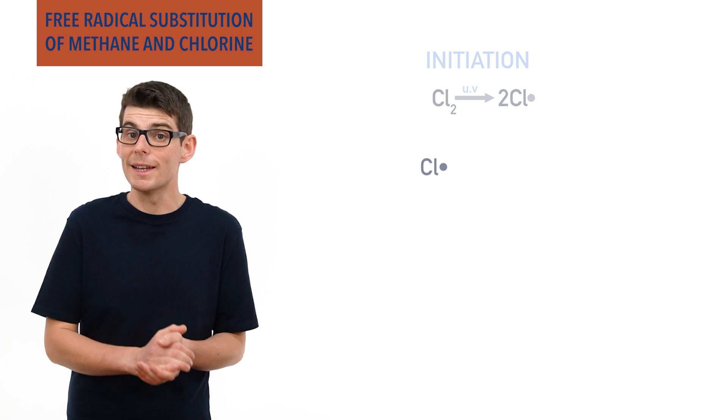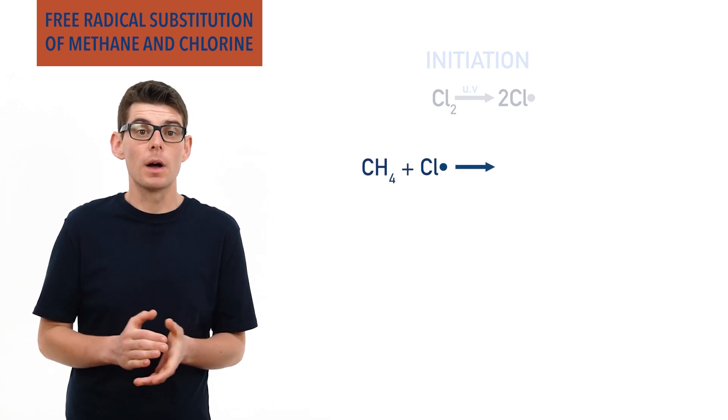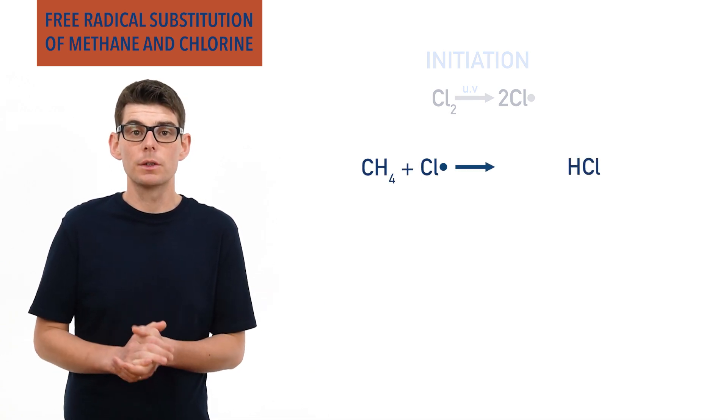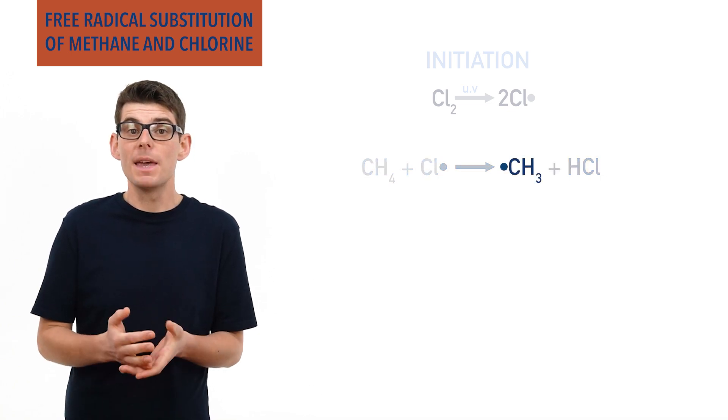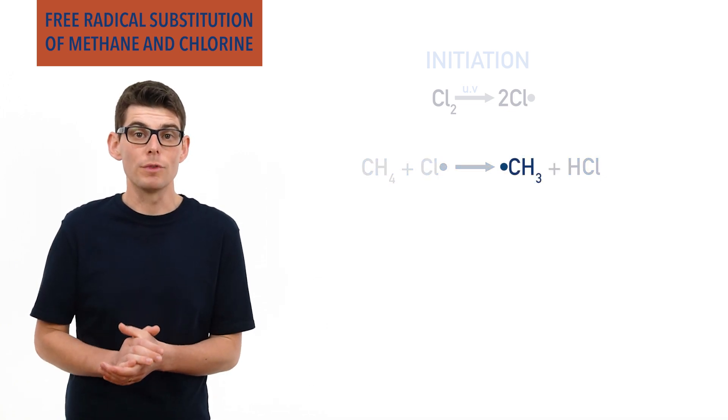A chlorine radical can now react with methane and will form hydrogen chloride, a non-radical. This will leave an unpaired electron on a CH3 group, making what is called a methyl radical.